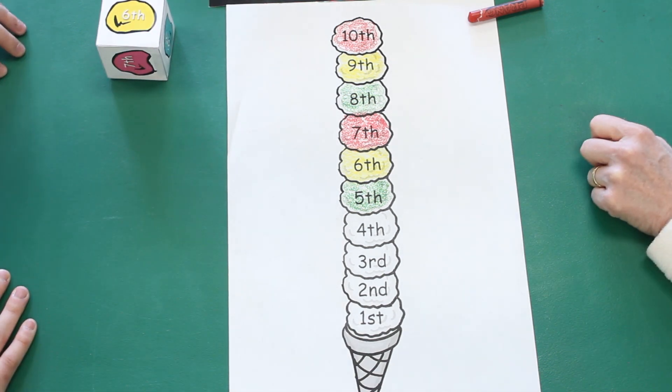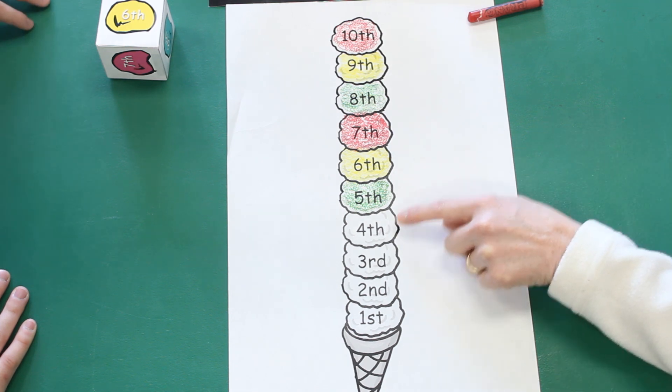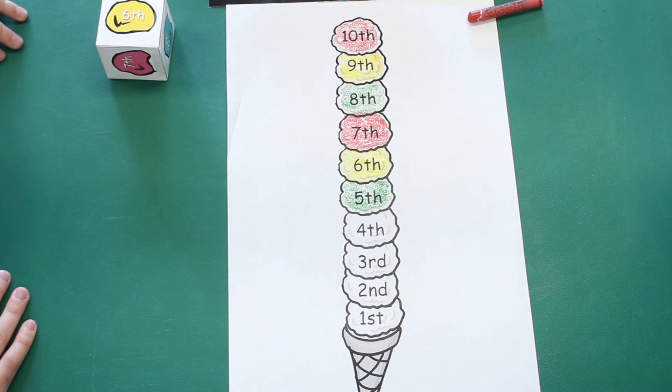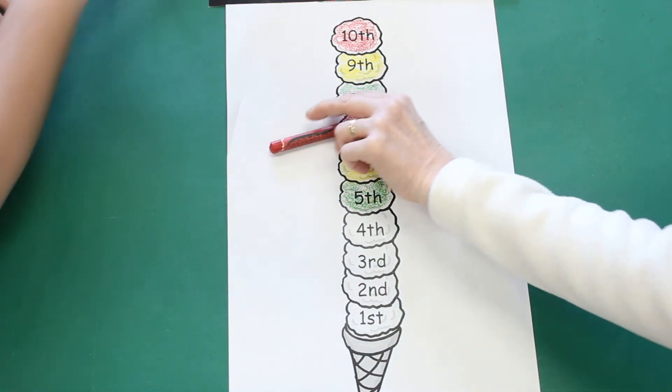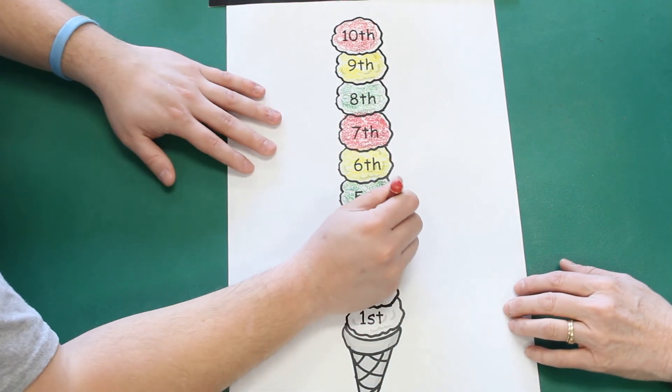What color should the fourth scoop of ice cream be? I'm going to go out on a limb and say red. Red. Ethan, I think you're right. Would you color the fourth scoop of ice cream red?